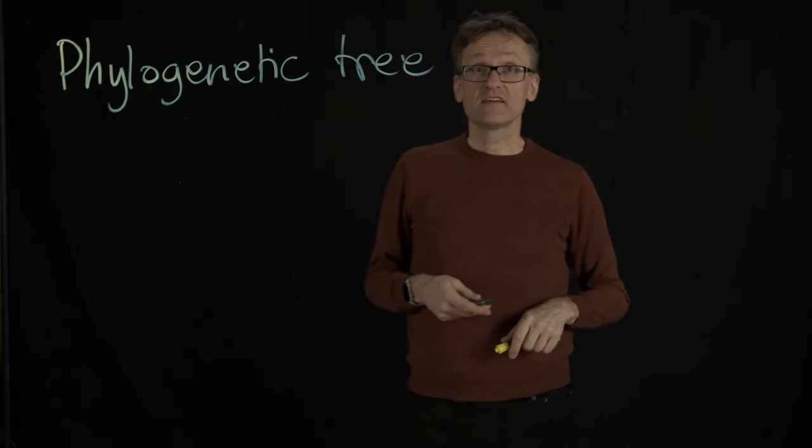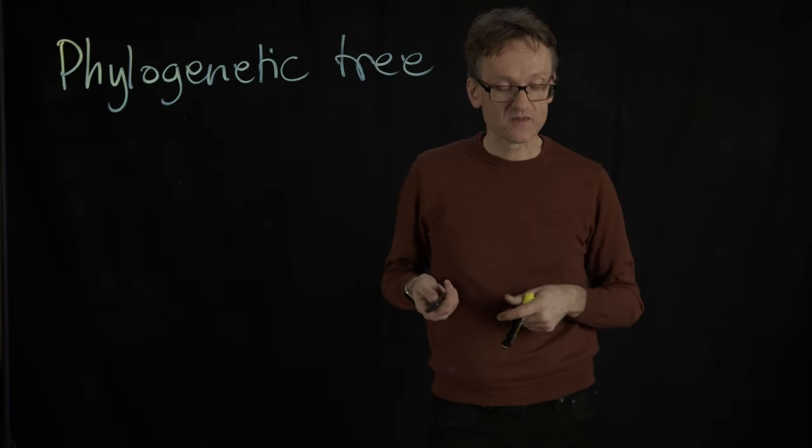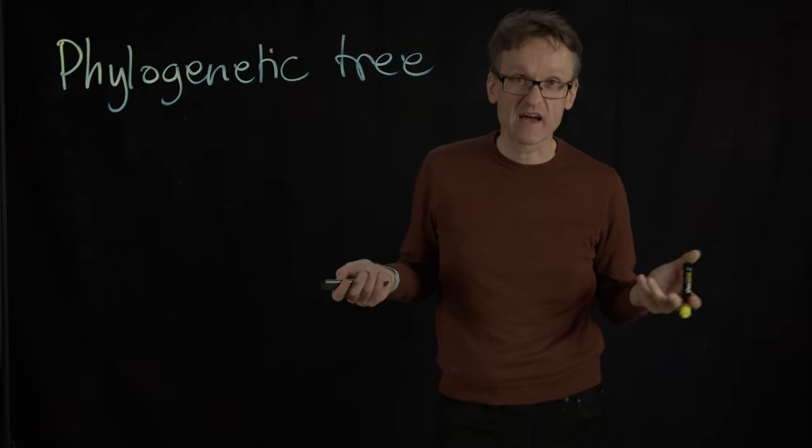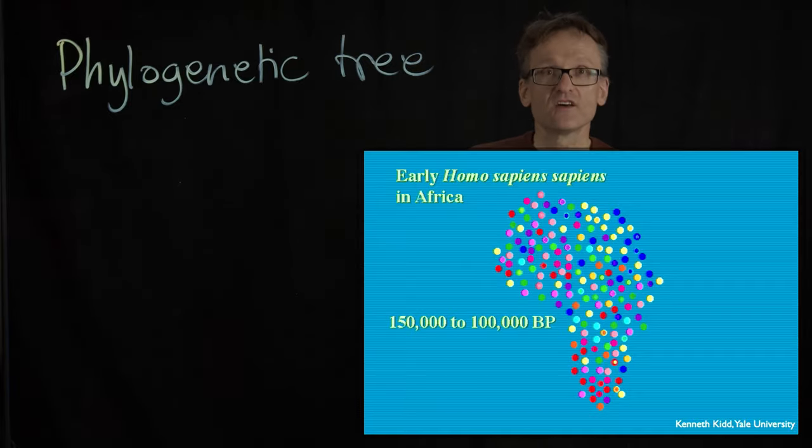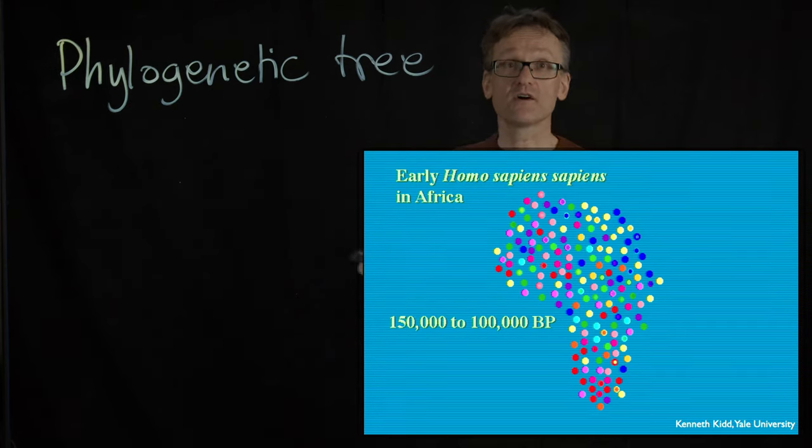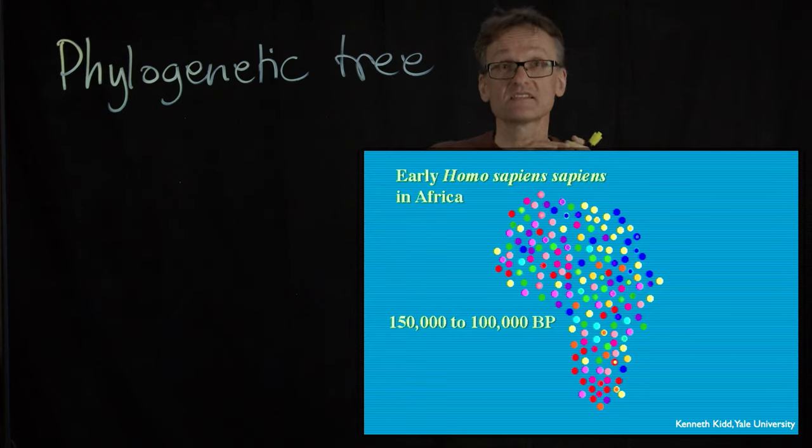Kenneth Kidd at Yale University published extensively on this about human evolution. So using phylogenetic trees, we can trace human evolution back, in particular to Africa. Some 150,000 to 100,000 years before present, we had by far the largest evolutionary diversity in Africa. And we know that because we can still see that evolutionary diversity in Africa.